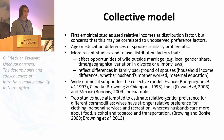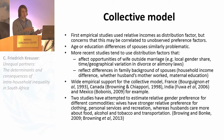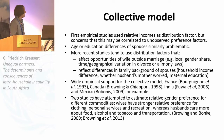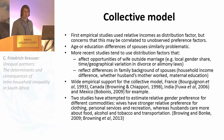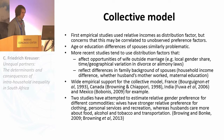Initial empirical studies used relative incomes as distribution factors, but there may be endogeneity, as a household might simply prefer that its more productive member does employment work. Age and education differences are similarly problematic. More recent studies tend to look at distribution factors that affect outside opportunities of the spouses or give an indication of the spouse's wealth before marriage. There is widespread empirical support for the collective model — at least in France, Canada, India, Mexico, England, and a few other countries. There are also two studies by Browning and others that estimate relative gender preferences for different commodities, showing that wives generally have a stronger preference for clothing, personal services, and recreation, whereas husbands care more about food, alcohol, tobacco, and transportation.